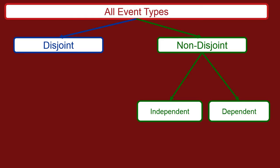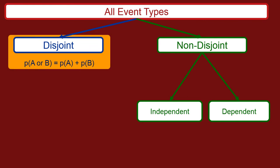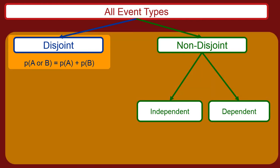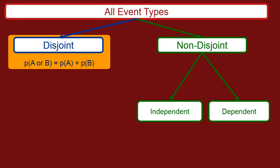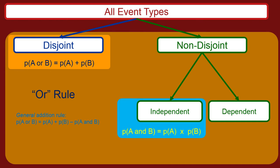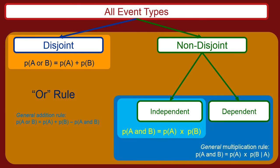Let's review the types of events we've talked about. You have disjoint events and non-disjoint events. Non-disjoint events can be further subdivided into independent and dependent. The addition rule — the or rule — is a simplified version of the general or rule. For this class, we're just going to focus on the rule that applies only to disjoint events. The multiplication rule applies only to independent events.